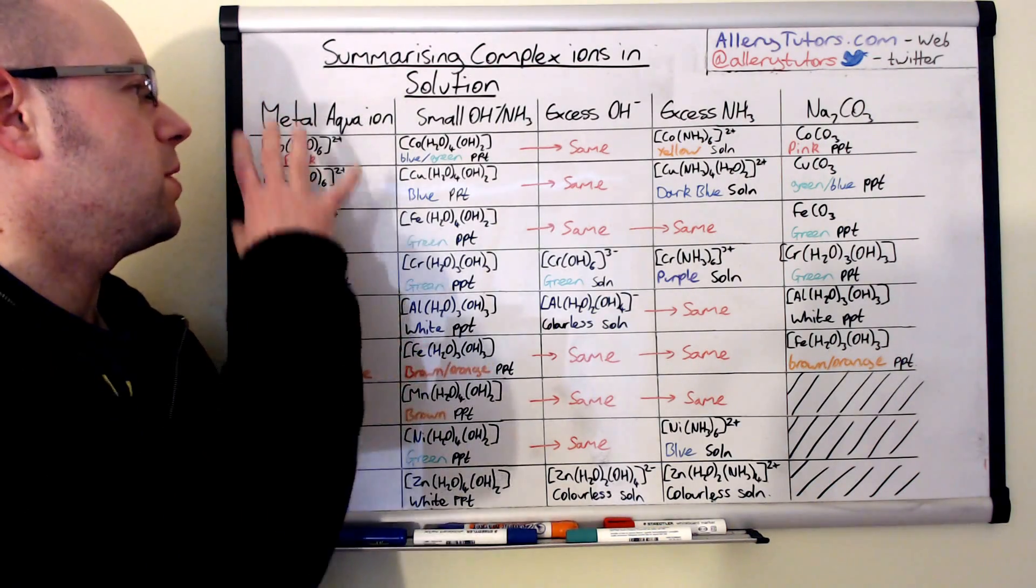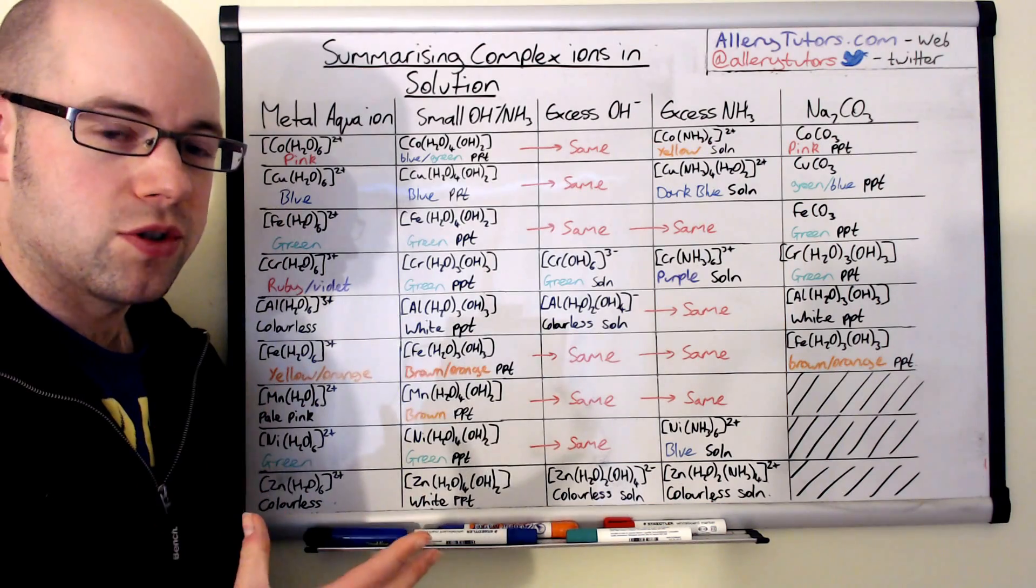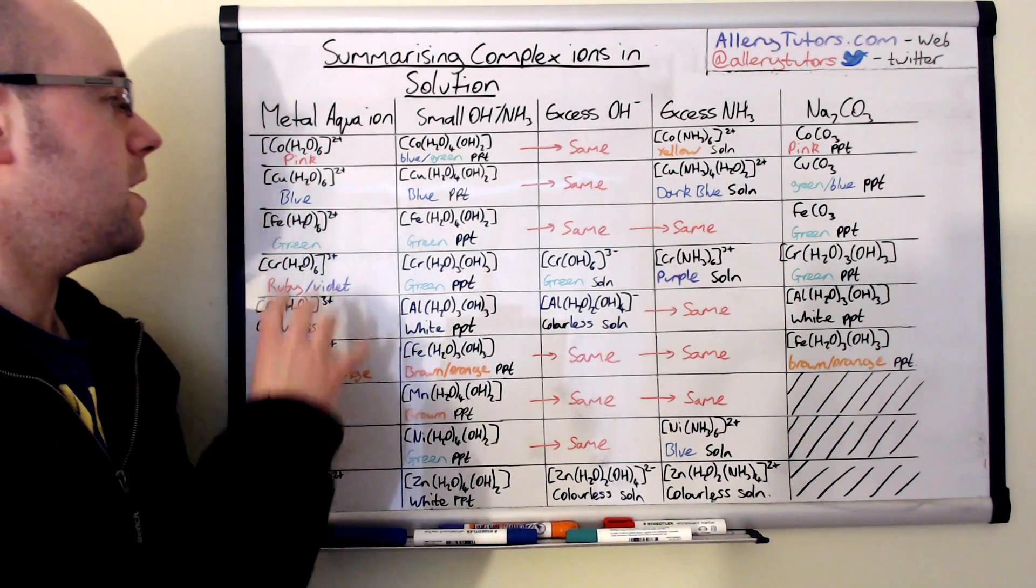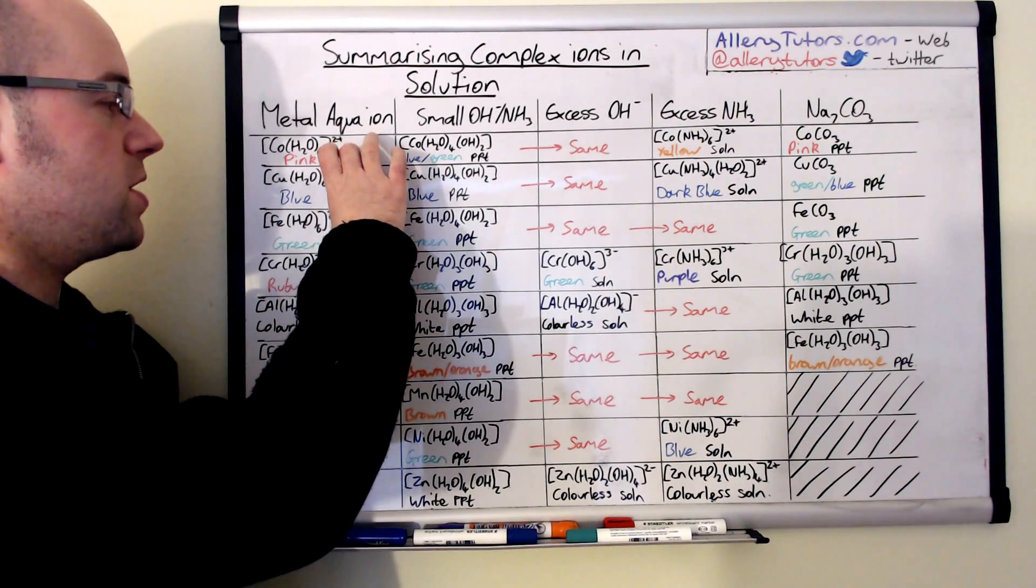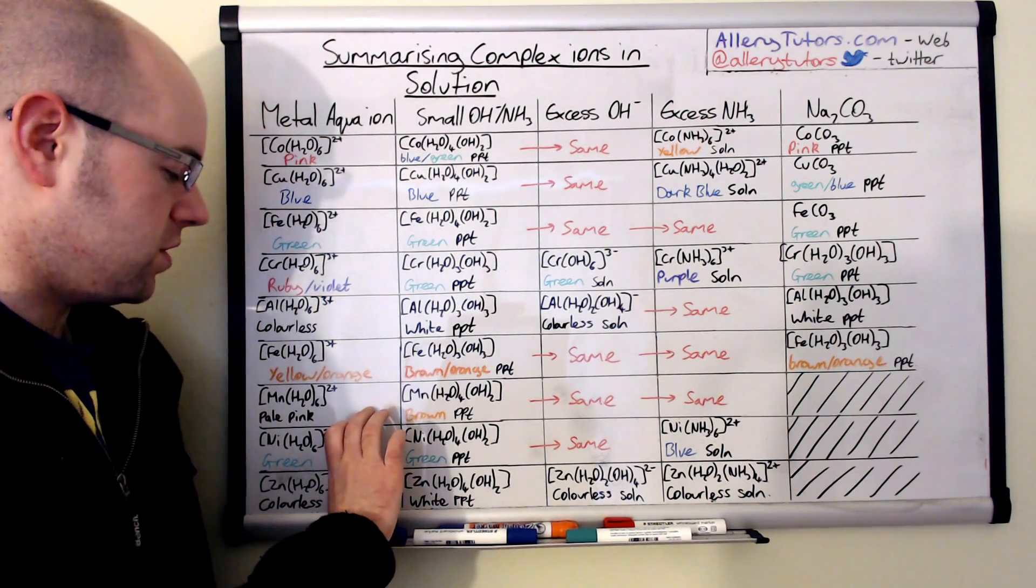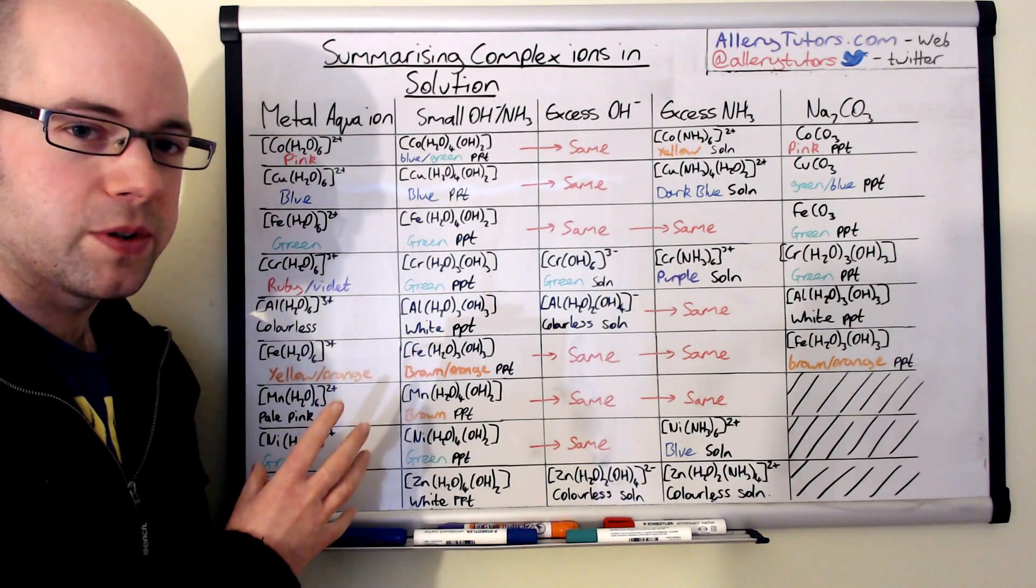Okay, so we're going to start with the first one. These are our metal aqua ions. This is where we take our transition metal compounds and form them into solutions. You can see I've split it up, the first three rows here are 2+ ions and these ones are 3+ ions, and these are just additional 2+ ions just at the bottom as well here.